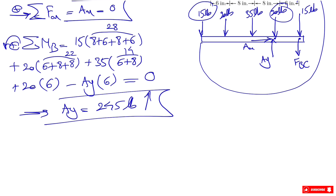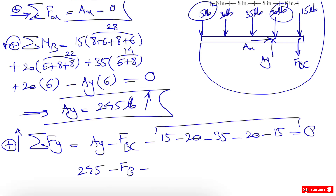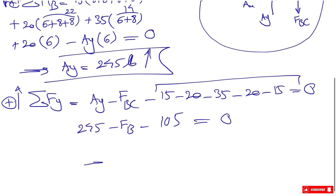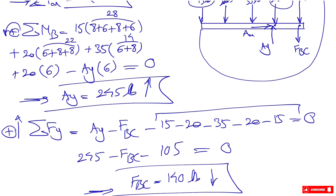Now we do the sum of forces in the y direction, which is the easier approach. Taking upward as positive: Ay minus FBC minus 15 minus 20 minus 35 minus 20 minus 15 = 0. Substituting Ay = 245, we can solve for FBC, the tension in the cable, and we get FBC = 140 pounds. The positive result confirms the direction was correct, which makes sense since a cable can only be in tension, not compression.